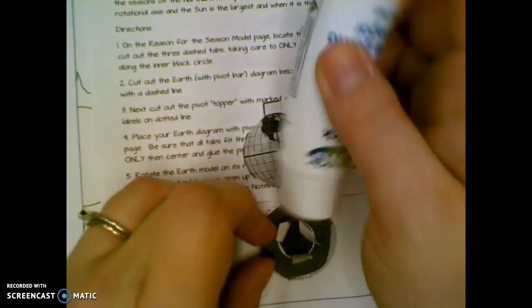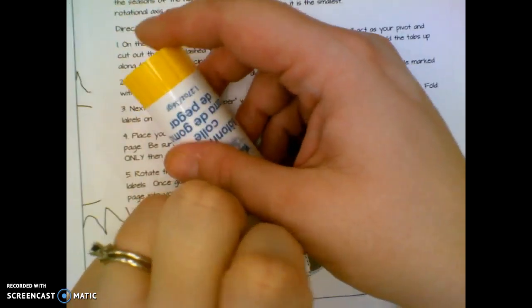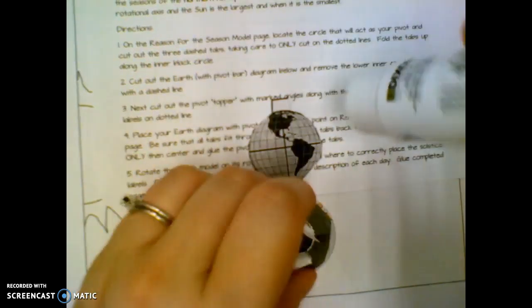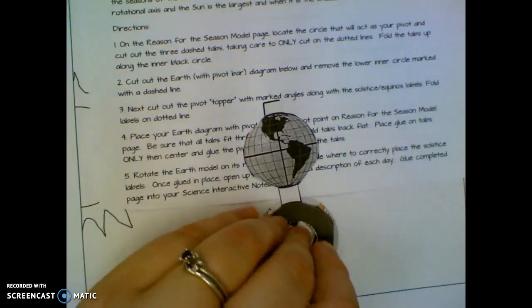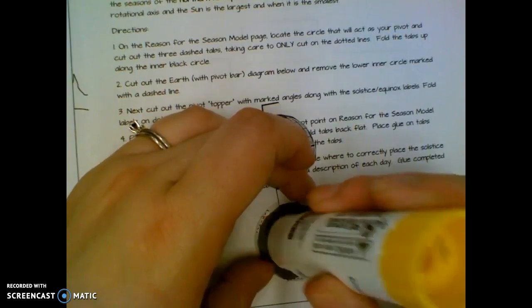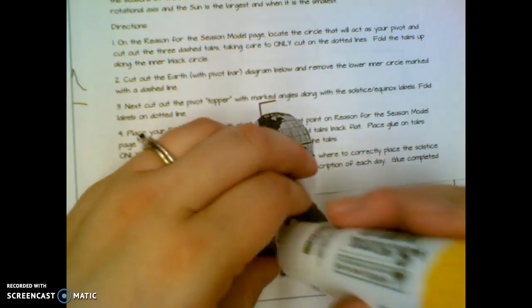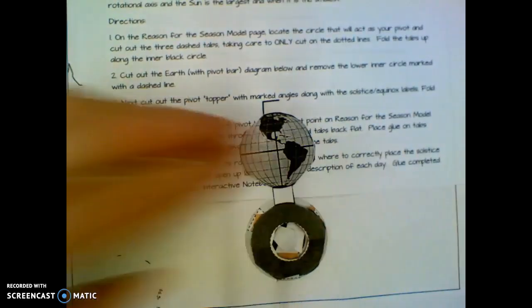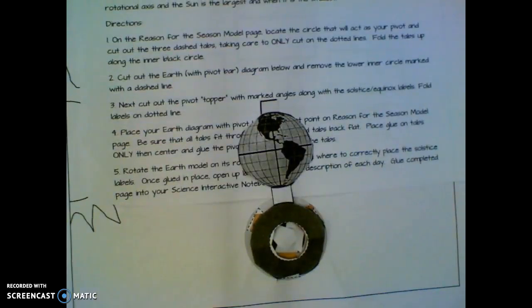So now we've got glue on those tabs. I'm going to fold those back to the middle and I might put just a smidge more. You don't want to get glue on this gray circle or on anything other than the tabs, because that's where the pivot topper is going to attach and you don't want it to stick your earth down so that it can't move.